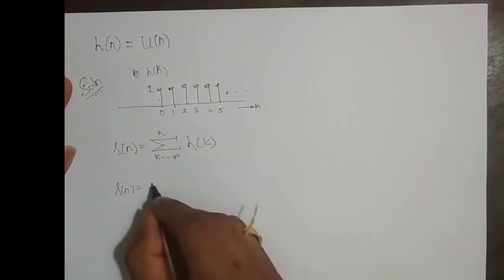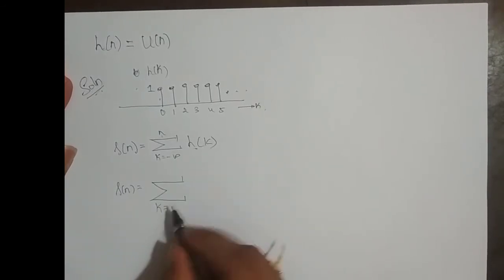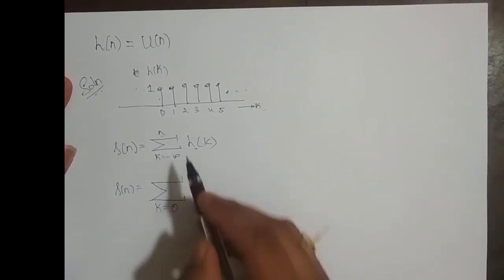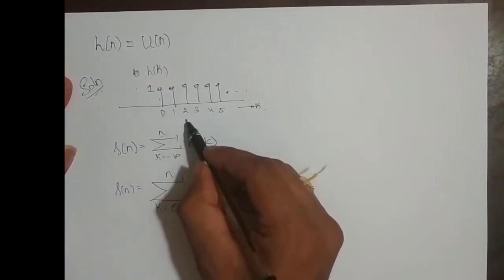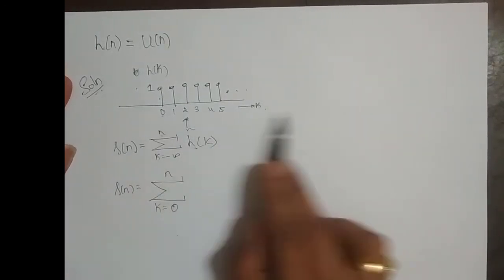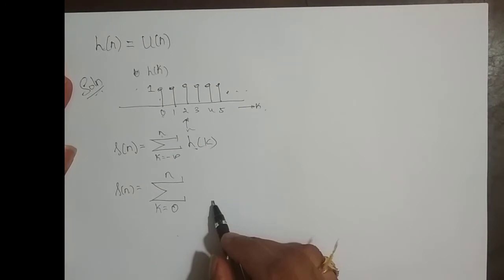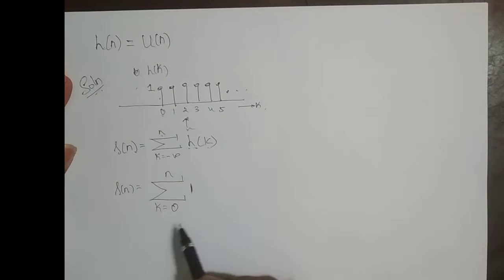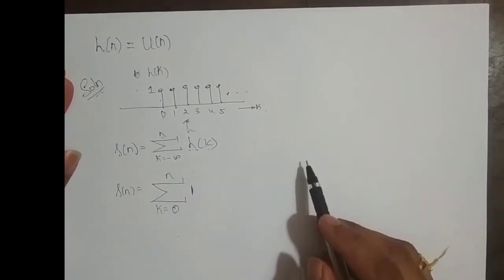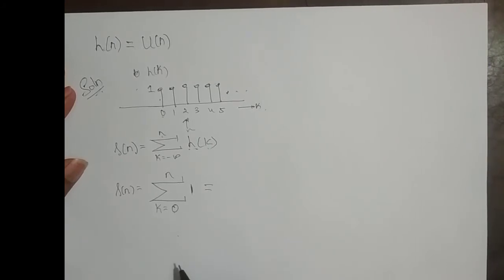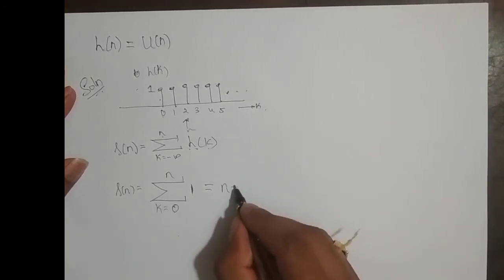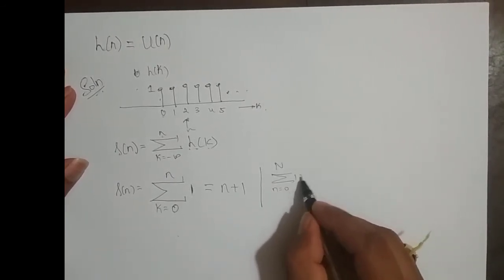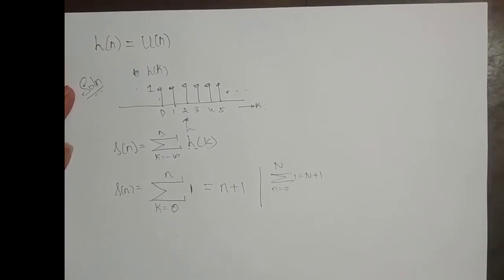So we will just take up this problem. S of n is equal to summation k from 0 to n, since the impulse response starts from 0 and ends at n, where n is the slider. And h of k equals 1 for k varying from 0 to n. This is nothing but n plus 1, by the standard form: summation from 0 to n of 1 equals n plus 1.